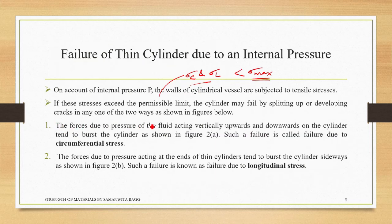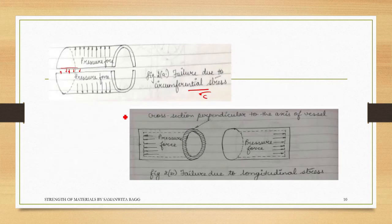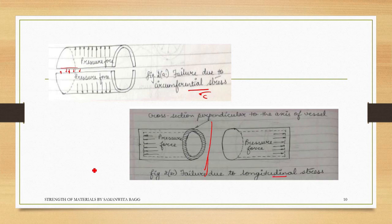The forces due to fluid pressure acting at the ends of the cylinder tend to burst the cylinder sideways — this is failure due to longitudinal stress (sigma_l). The cylinder breaks into two parts, the length elongates before breaking, and stress is generated on both end surfaces. Both sigma_c and sigma_l are tensile in nature.